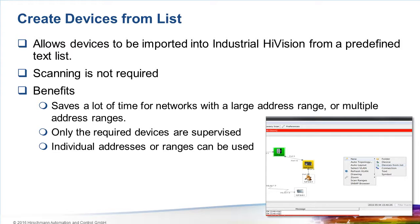This has several advantages. First of all, there is no scanning of address ranges, so the time-consuming scans of large address ranges are no longer necessary. Secondly, a disadvantage with scanning is that it discovers everything — any device which has an IP address and responds to a ping will appear inside Industrial HiVision. Often, that's not what the network administrator wants, as it then becomes necessary to delete the unwanted devices. Importing from a list avoids this problem, leaving you with exactly the devices you want to supervise.